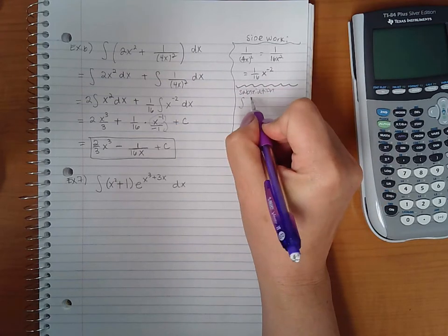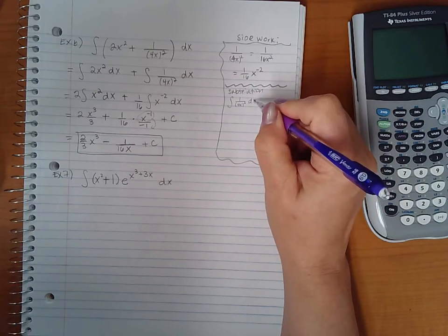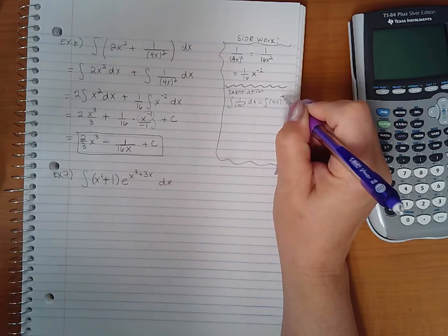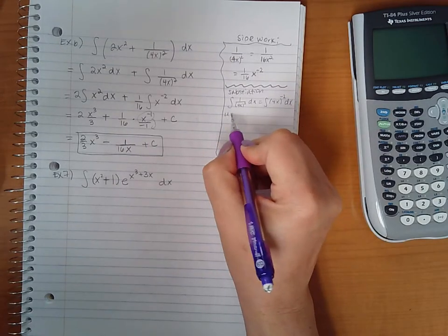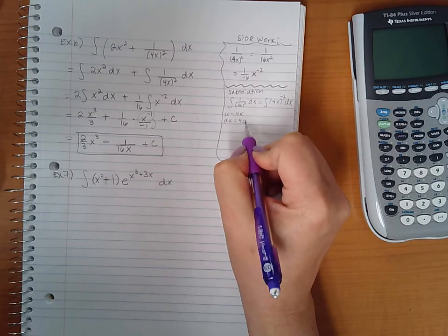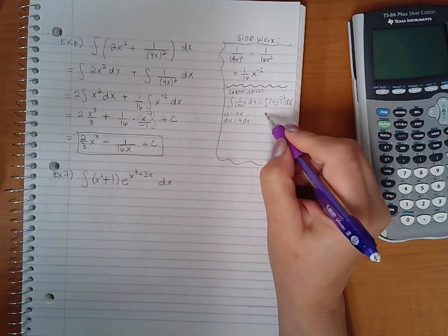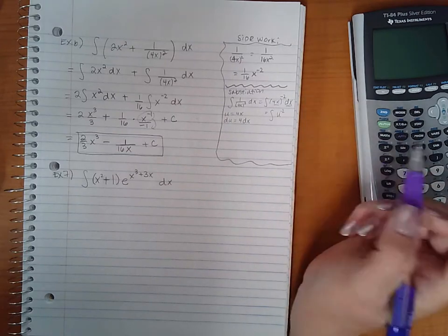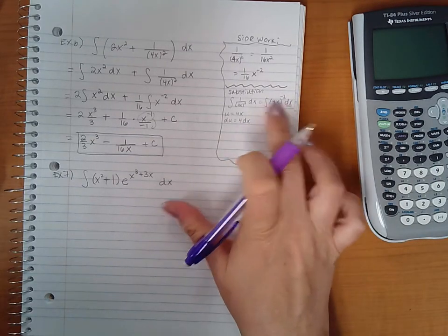Now if I wanted to do it using substitution, remember what I'm integrating: one over four x squared dx. What I could do is rewrite that as four x to the negative two dx. Then I could let u equal the four x, the du would equal four dx, and since I don't have, this would become u, but I still have to substitute something for dx.